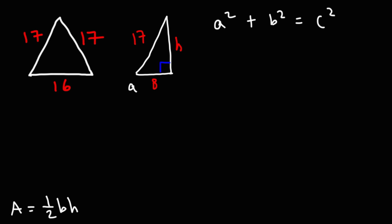Now, let's make a equal to 8, rather. b is going to be the height h. The hypotenuse, which is across the right angle, that's c. That's going to be the longest side of the triangle, which is 17.